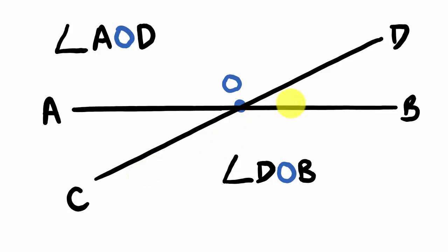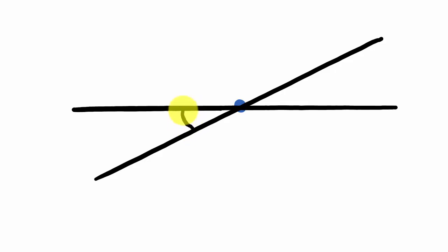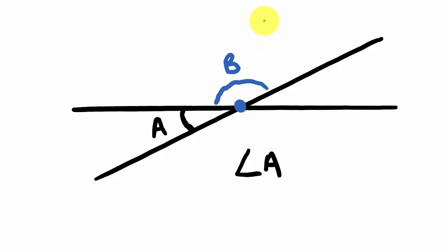There's another way of identifying angles in a diagram. Occasionally you might just label an angle with a single letter. We mark it with this little circular arc, and put a letter inside — so I could call this angle A, and this other one angle B, and write it as angle B. That's the other way we go about naming our angles.